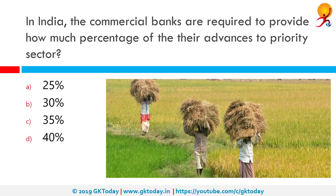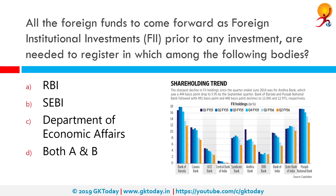In India, the commercial banks are required to provide how much percentage of their advances to the priority sector? The correct answer is 40%. Priority sector lending is an important role given by the Reserve Bank of India to banks for providing a specific portion of bank lending to sectors like agriculture and allied activities, micro and small enterprises, poor people for housing, students for education, and other low income groups and weaker sections. This is essentially meant for all-round development of the economy, as opposed to focusing only on the financial sector.